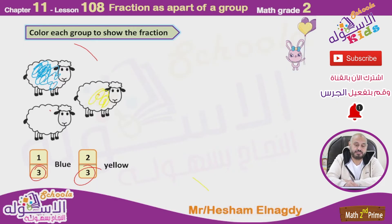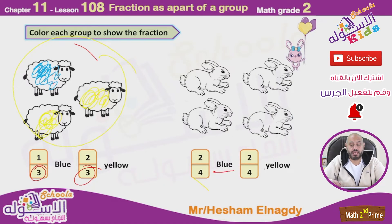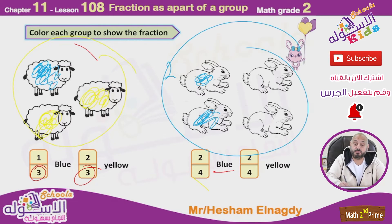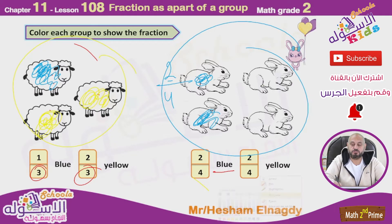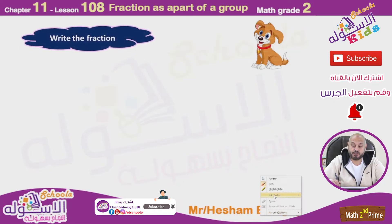The total here is four. Two-fourths are blue and two-fourths are yellow. The total number is four, so two from four are yellow — two-fourths. And two from four are blue — two-fourths.